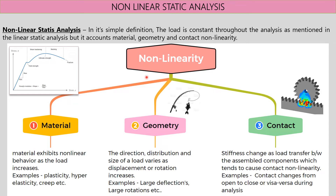There are mainly three types of non-linearity: material non-linearity, geometric non-linearity, and contact non-linearity. For material non-linearity, if you look at the standardized stress-strain graph for a steel component, from the point zero to the yield strength there is a straight line.